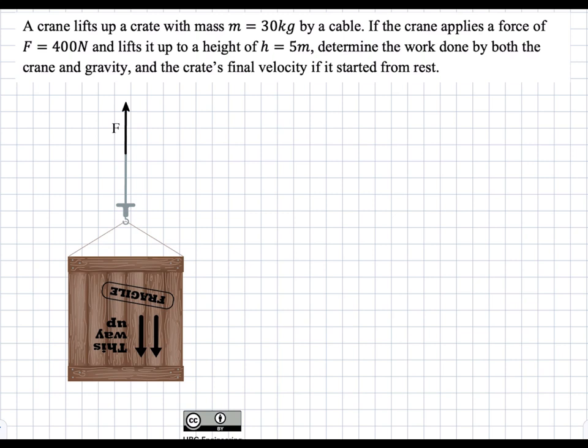In this question, we have a crate that is being lifted by a constant force at a height of 5 meters. We are asked to determine the work done by both the crate and gravity, and the crate's final velocity if it starts from rest.